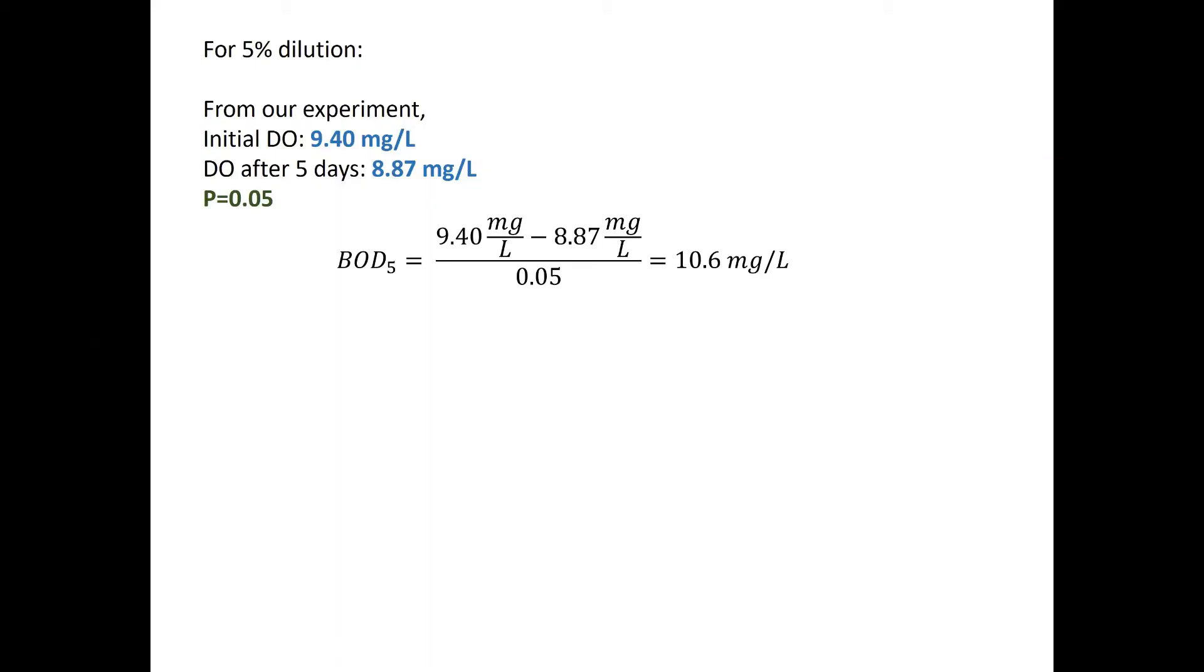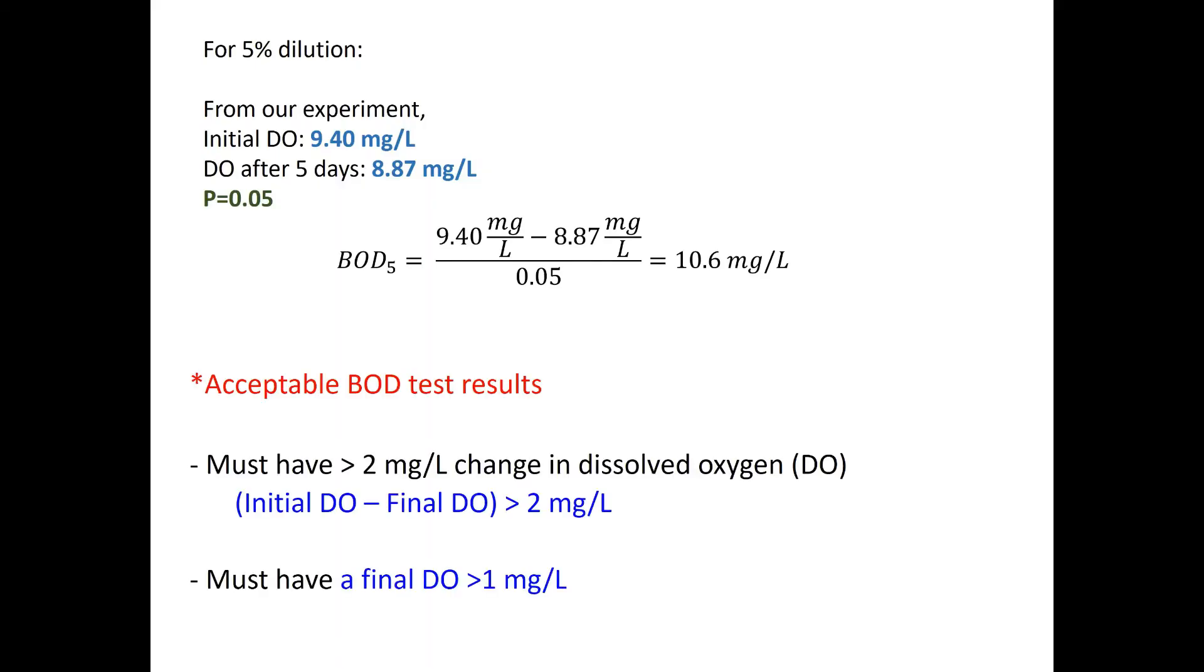However, we need to check first whether this BOD value is acceptable. We must have at least 2 mg/L change in DO concentration, and the final DO concentration must be higher than 1 mg/L. Our result meets the second one, but we only get a 0.53 mg/L difference in DO concentration, so this BOD value is not acceptable.